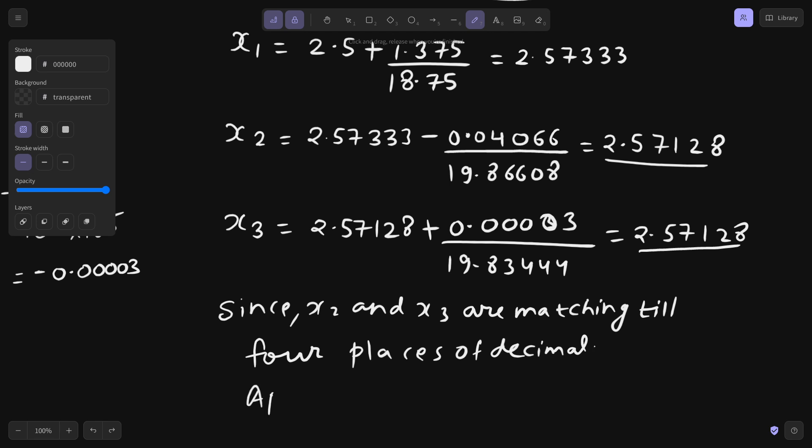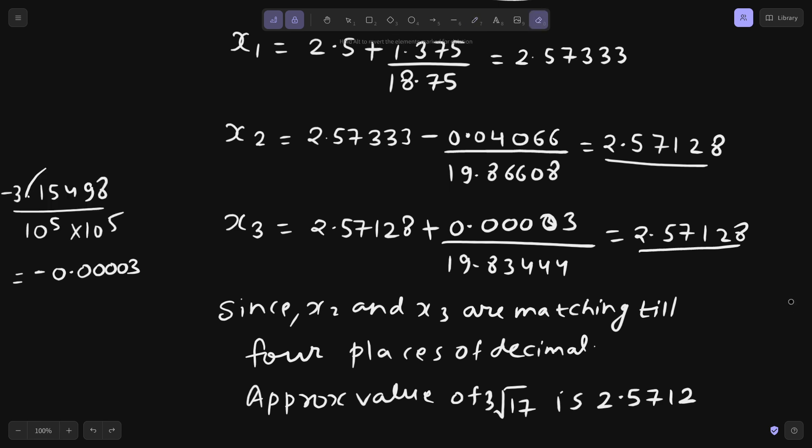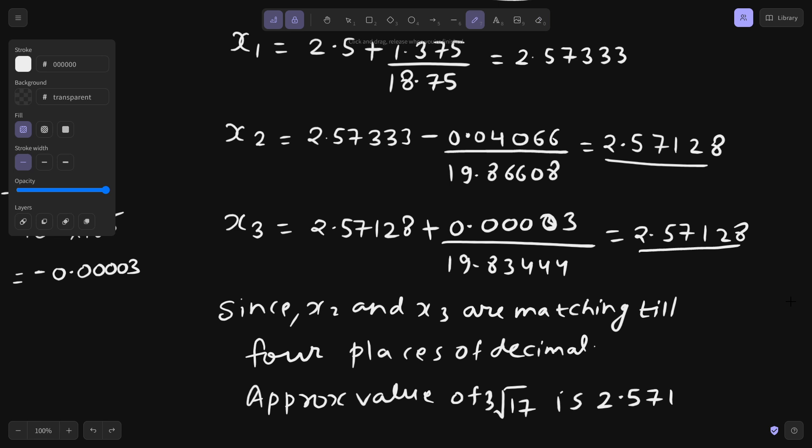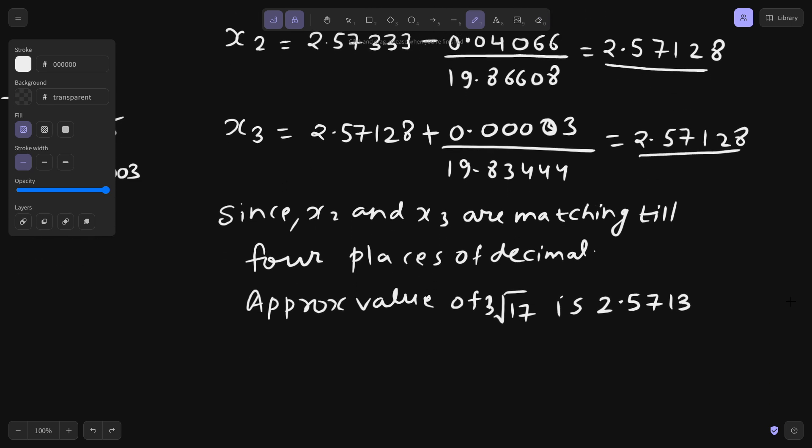So the approximate value of x is 2.57122. If you round off you can also write 2.5712. If you round off you can also write 2.5713 because after 2 you are getting 8 so if you round off you will get 2.5713 correct up to 4 decimals. Please let me write that also.